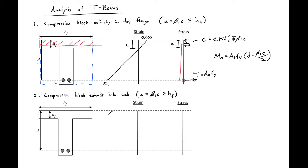Our second case is if our compression block extends into the web. So in this case we would have some kind of neutral axis depth that extends a little further down. So here's our c, our 0.003 top fiber compression strain, our strain in our steel epsilon s.